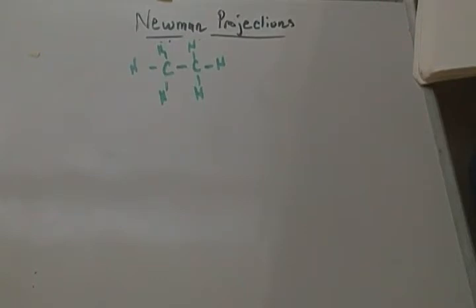Ethane is the simplest molecule you can give an example with in regards to Newman projections. But I think if you can understand how ethane works, you'll be able to apply the fundamentals to bigger molecules. I'll probably show examples of bigger molecules in the future, but for this video I'm just going to do ethane.